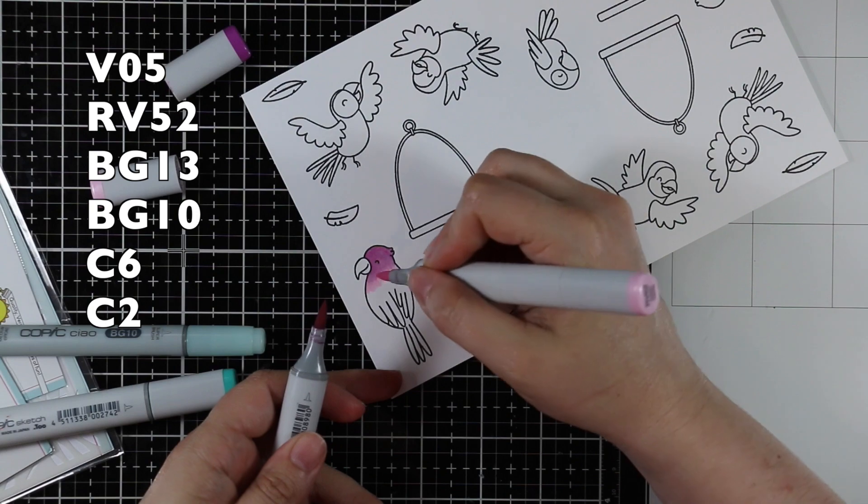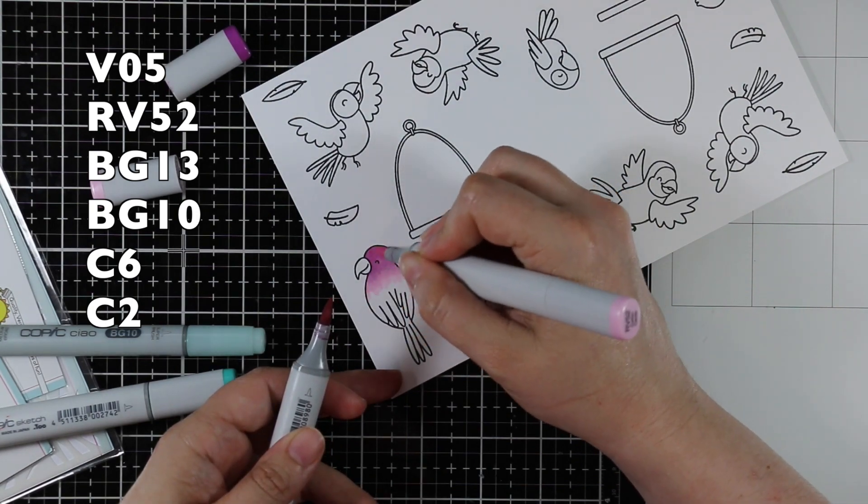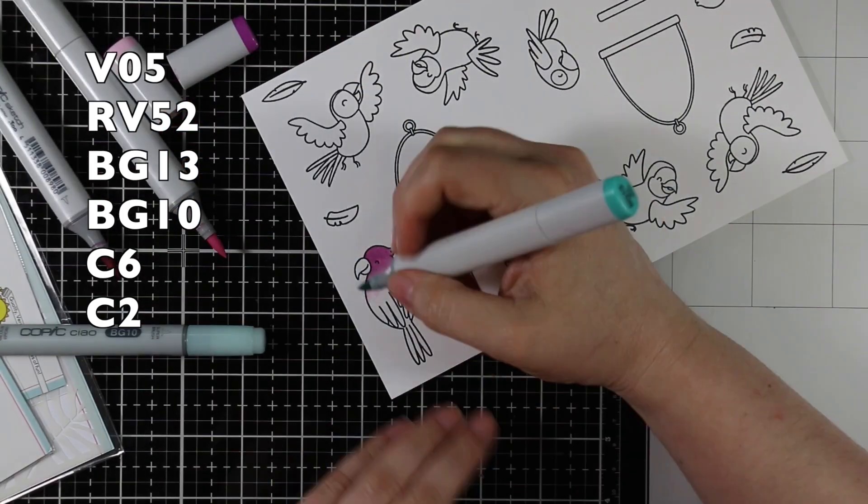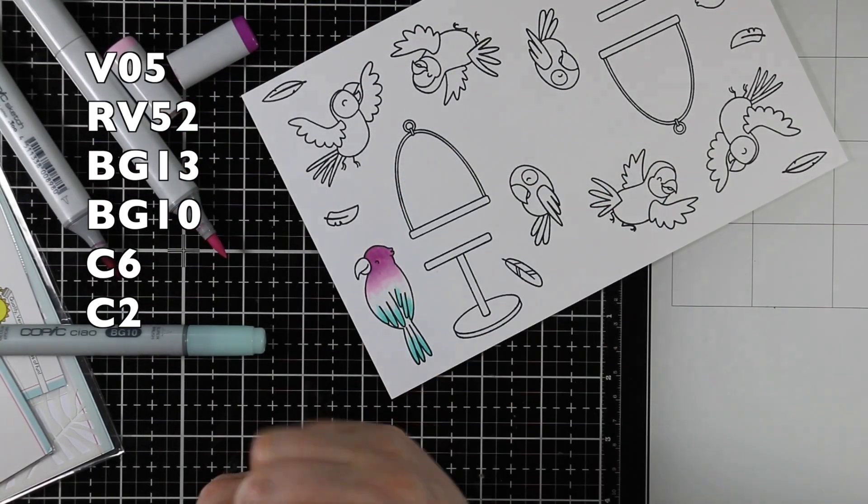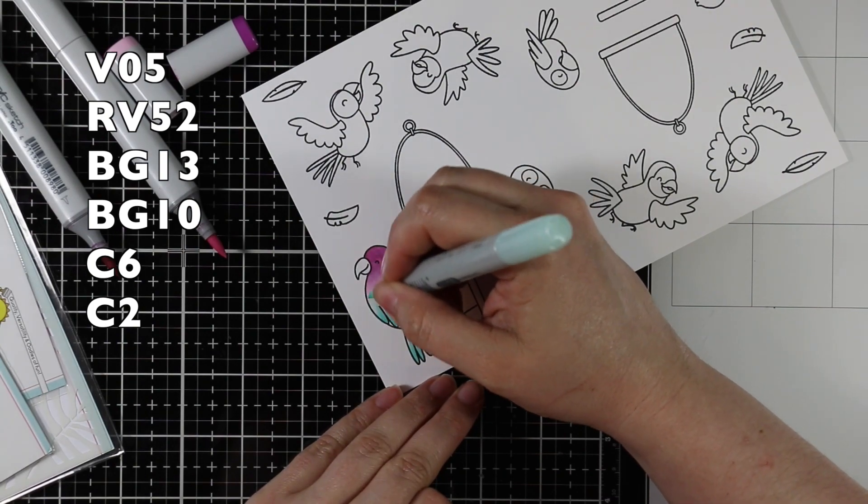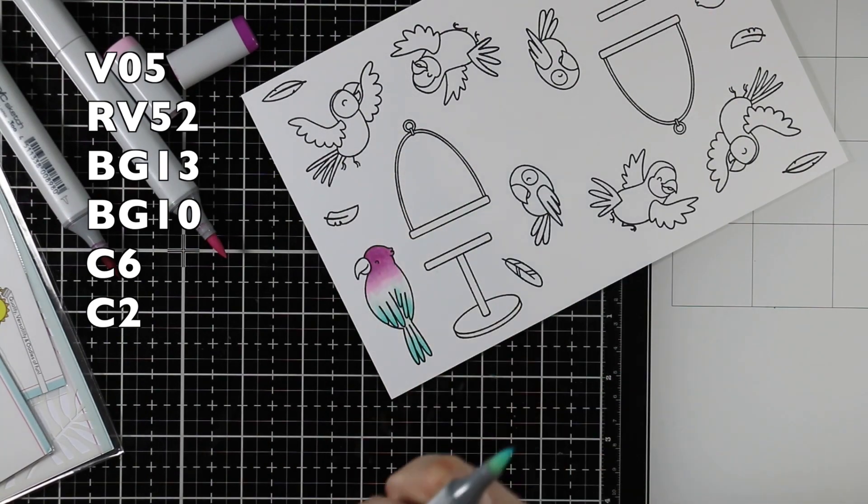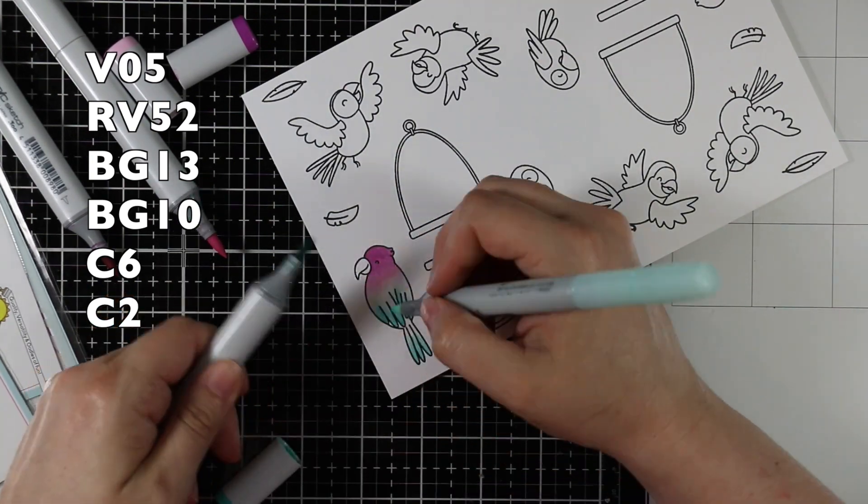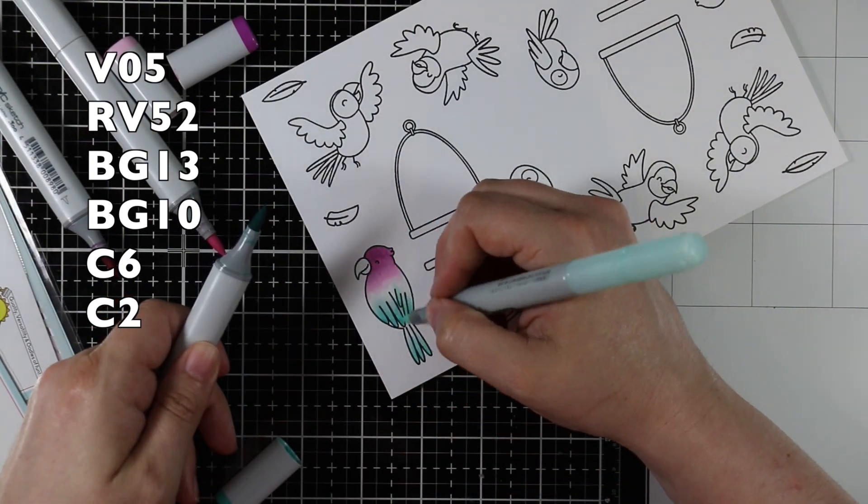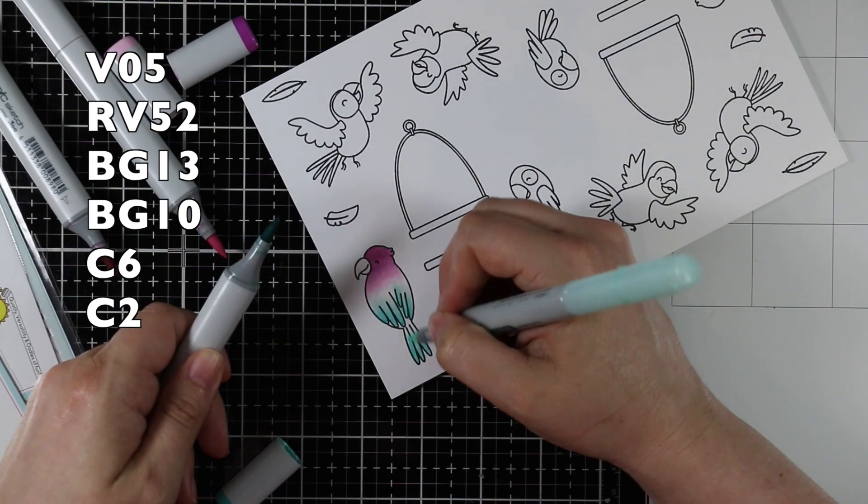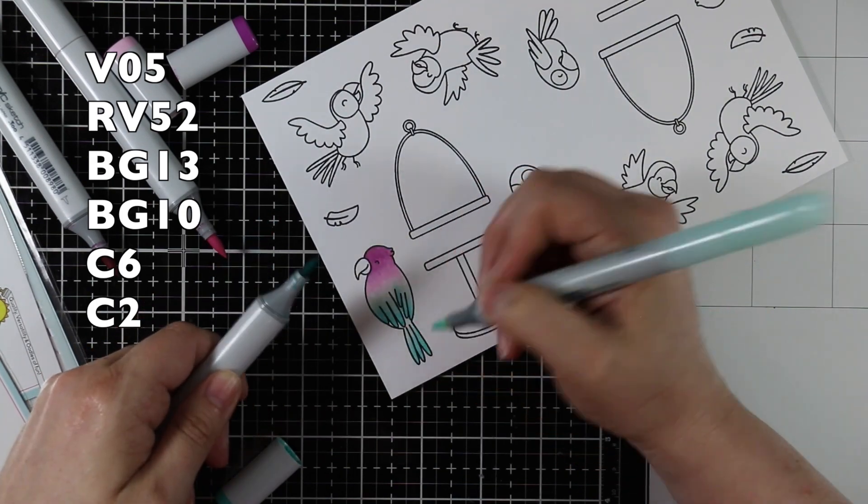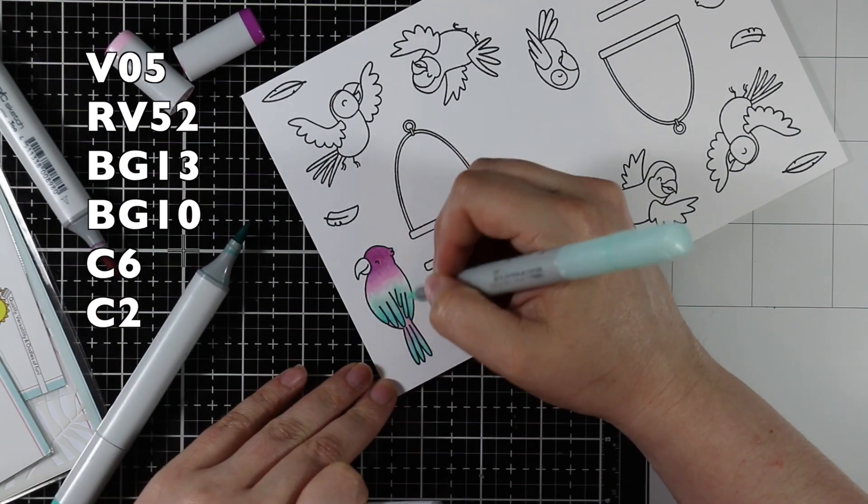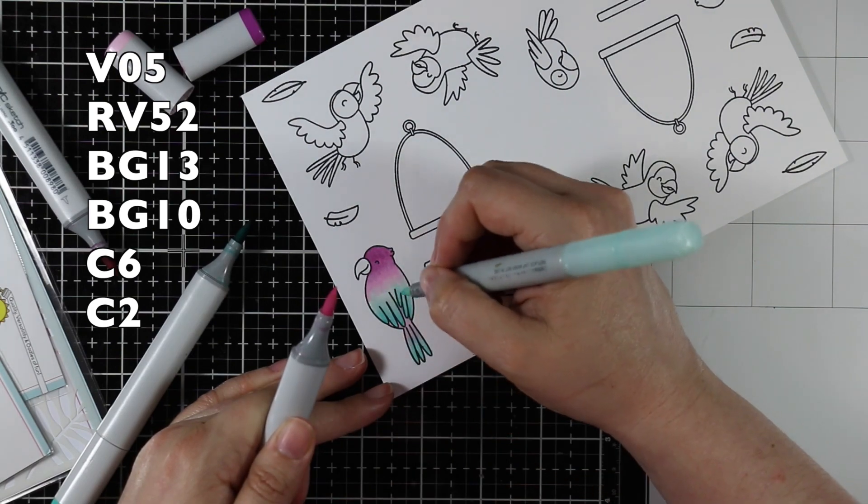I'm using my Copic markers to do all the coloring and I kept the amount of colors or shades per color fairly simple. With this first one I'm using two colors for the pinky purple shade and then two for the aqua. When blending the light and the darkest, I touch the tip of the lighter marker to the darker and it just picks up a bit of that darker color and it helps blend.